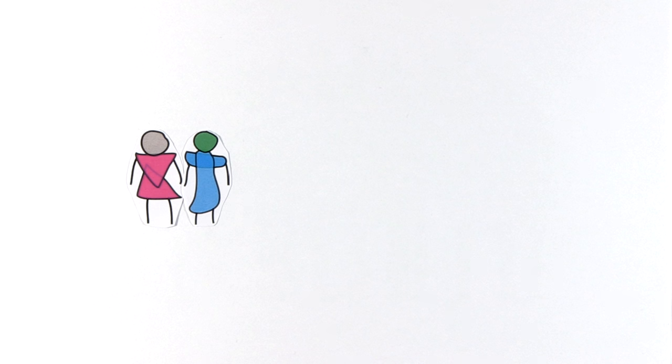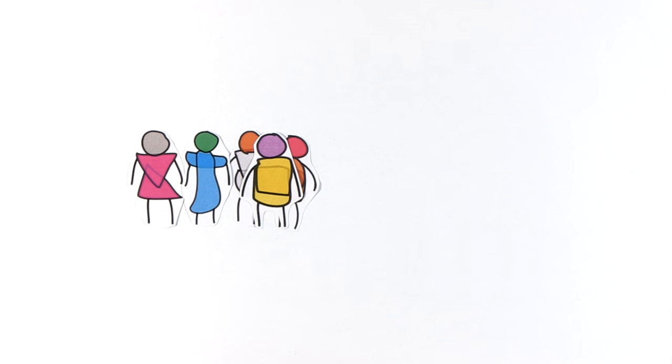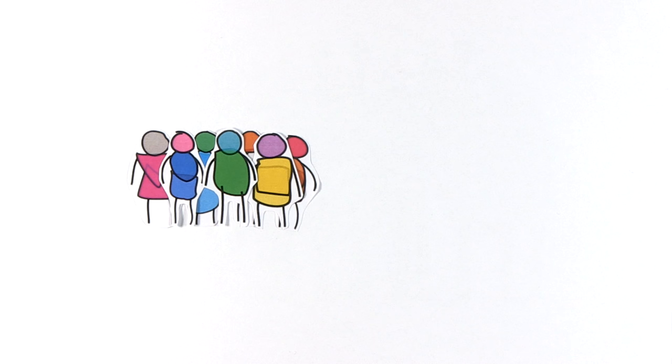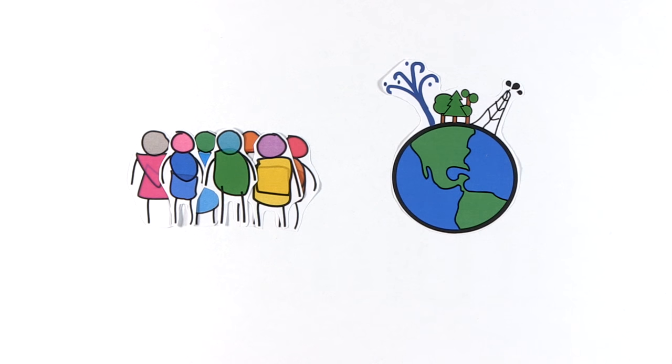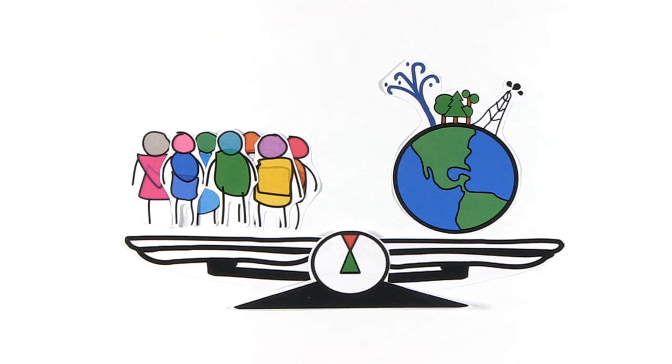There are more than 7 billion people around the globe, all unique in their own way and at the same time collectively part of our global interactions. As diverse as our cultures may be, we all share the natural resources of our planet and we directly depend on the balance of nature to thrive as a species.